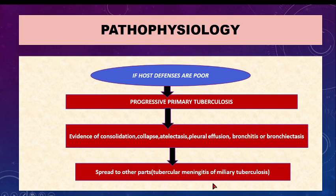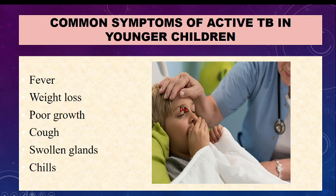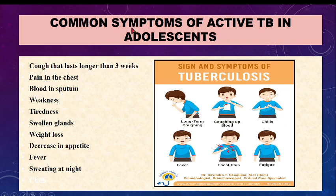Common symptoms of active TB in younger children include: fever, weight loss, poor growth, cough, swollen glands, and chills. On plotting the growth chart, weight will be seen to be low. The child will be coughing, and if you palpate the glands, they will be swollen.